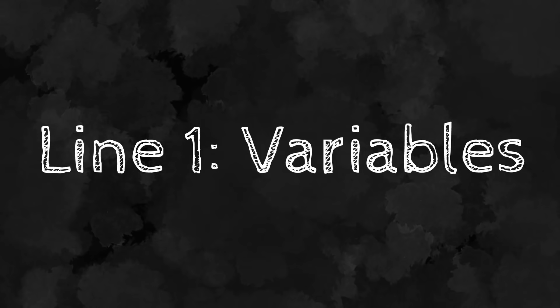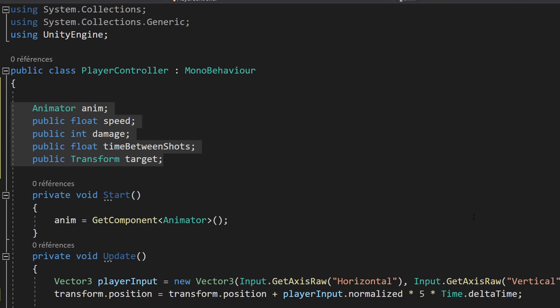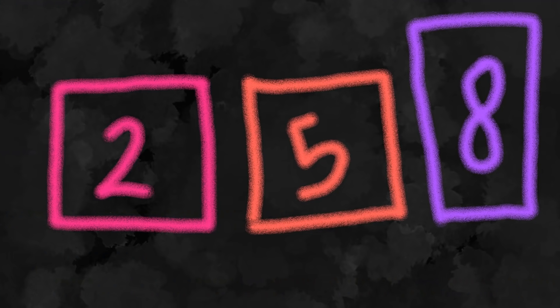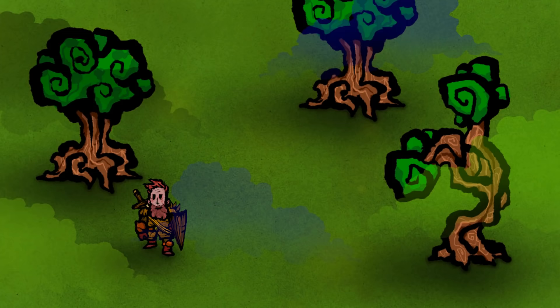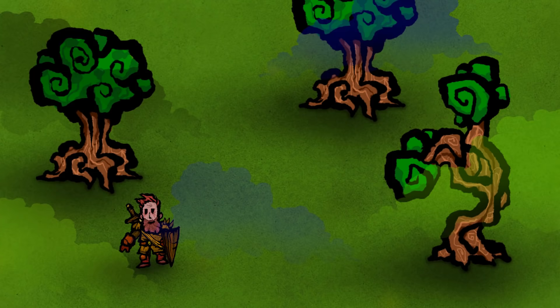Line number one that we use all the time is, of course, variables. These are everywhere and you'll often see them at the top of every script. Variables are basically like boxes that contain data — they store some kind of value inside of them. Variables are incredibly useful for easily tweaking the properties of your objects. For example, a fireball projectile could have different variables you can modify, such as the speed, the damage it gives, the particles it spawns on impact, and so on.